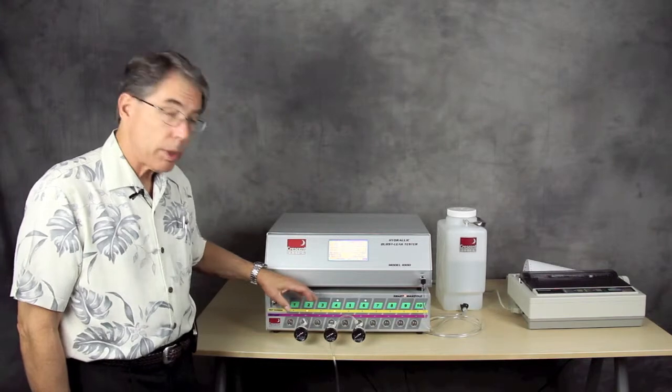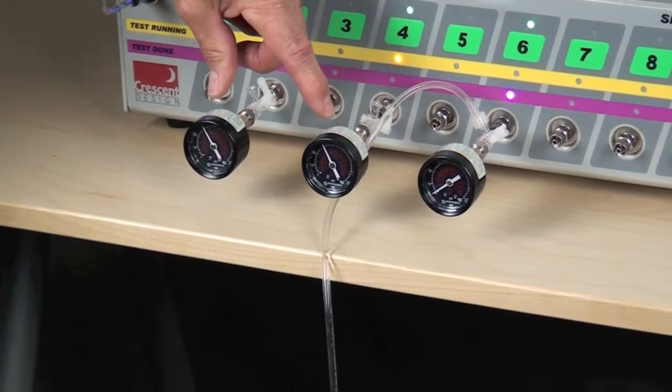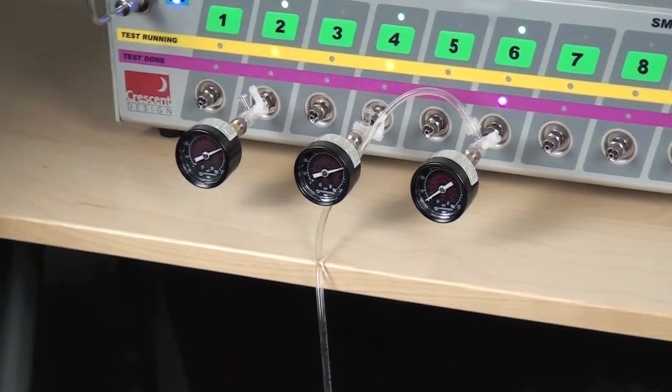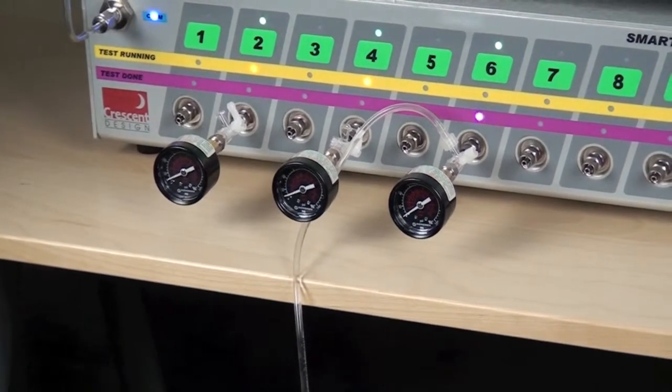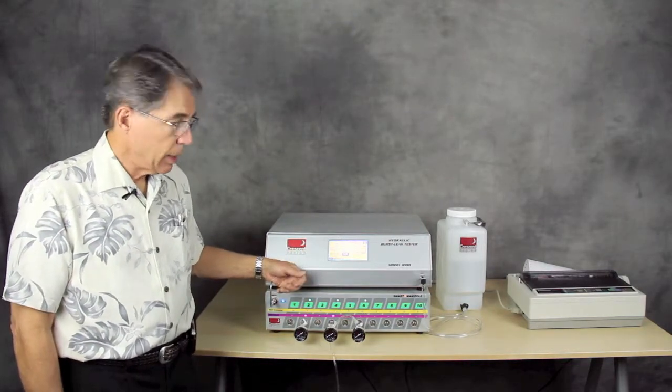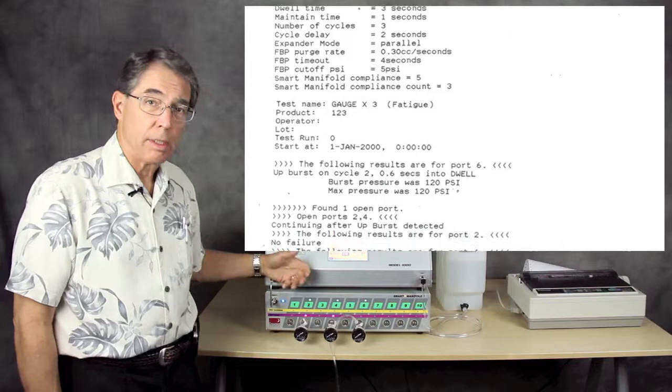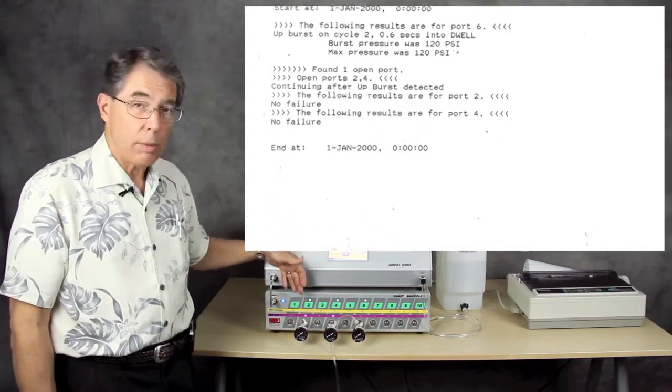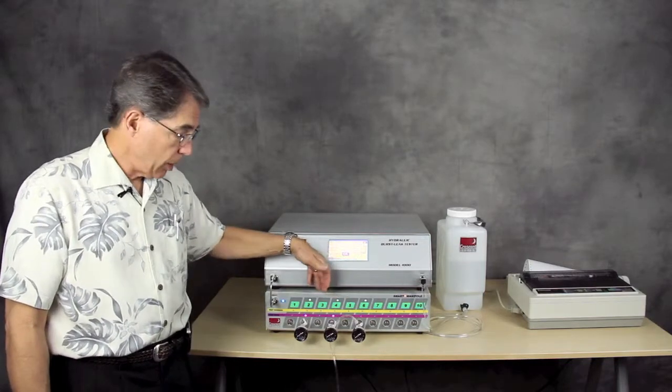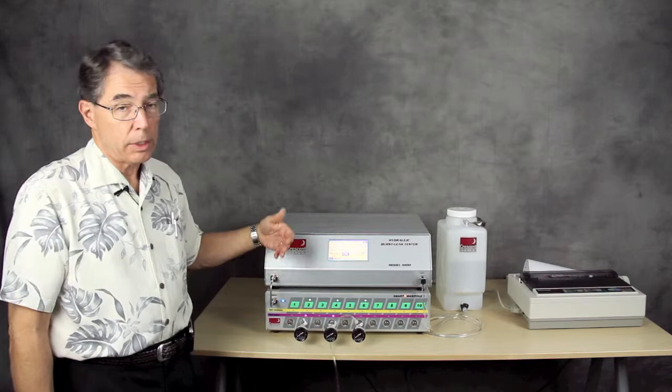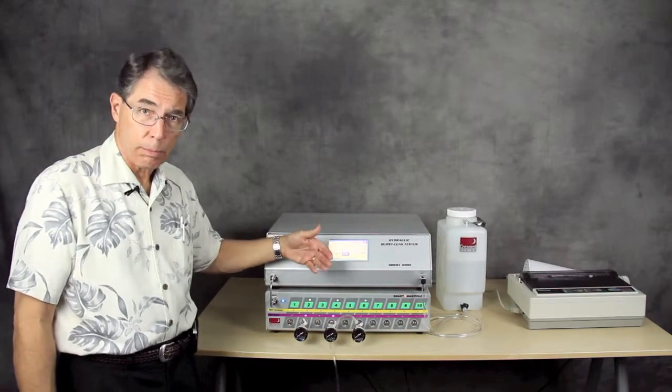It knew that it had three ports, only three ports selected, and there's still one cycle left to do. So you'll notice now it's going up for the third cycle to 120 for three seconds. And then it runs back down. And that is the end of the test. And the test results are now being printed on the printer over on our right. And that's the end of a parallel test. And you can see why we call it the smart manifold because it was able to determine which port had failed, stop the test, find the port, and then continue on either until all of the products have failed or until the program number of cycles have completed.